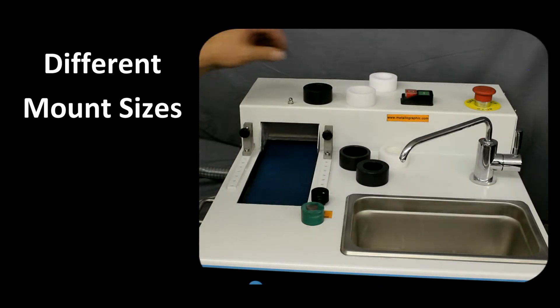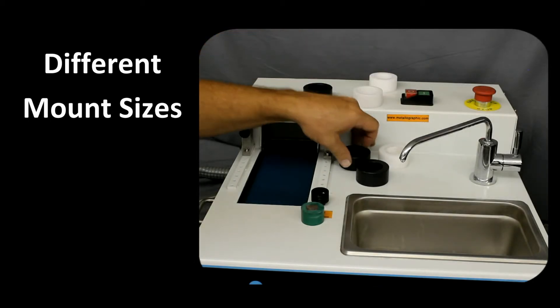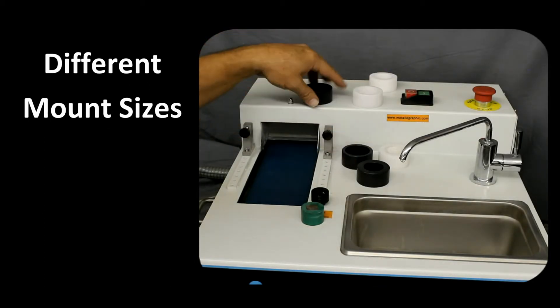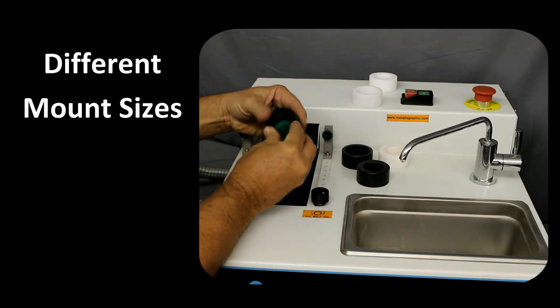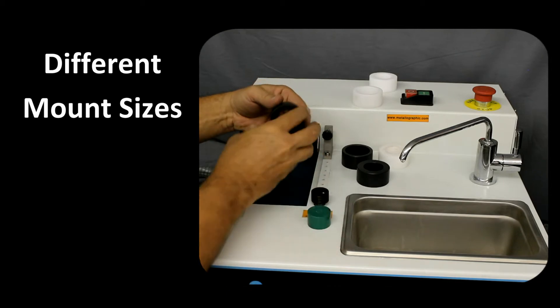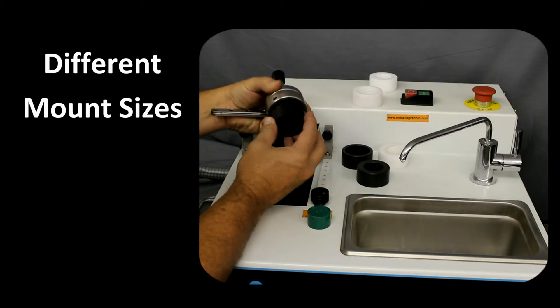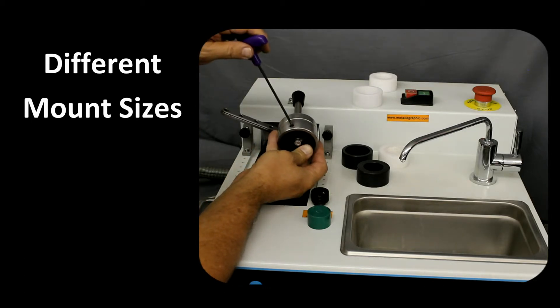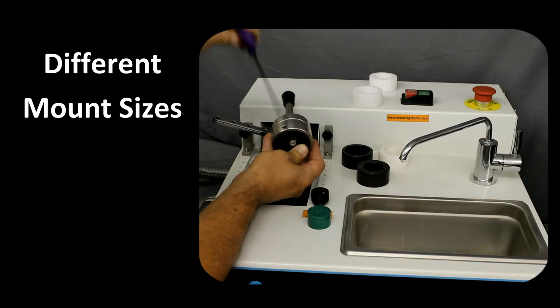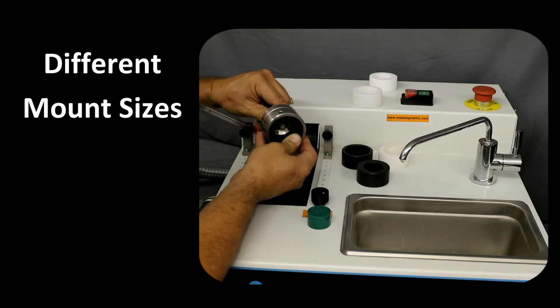The holder can be easily adapted for different mount sizes by replacing the ring on the holder with the correct size ring. Simply loosen the set screws to remove the existing ring, insert the alternative ring, and tighten the set screws.